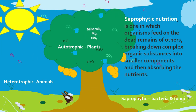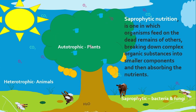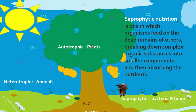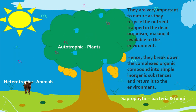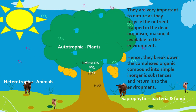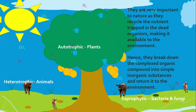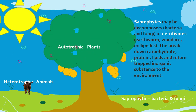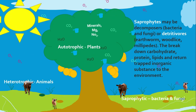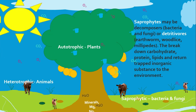Saprophytic nutrition is one in which organisms feed on the dead remains of others, breaking down complex organic substances into smaller component nutrients and then absorbing the nutrients. It is important to note that in most cases, as with the decomposer, this type of digestion is done outside of the organism. They are very important to nature as they recycle the nutrients trapped in dead organisms, making it available to the environment. Hence, they break down complex organic compounds into simple inorganic substances and return them to the environment. Saprophytes may be decomposers — for example, bacteria and fungi — or detritivores such as earthworms, wood lice, and millipedes. All organisms feeding on dead and decaying organisms are considered to be saprophytes. They break down carbohydrates, protein, and lipids and return trapped inorganic substances to the environment.